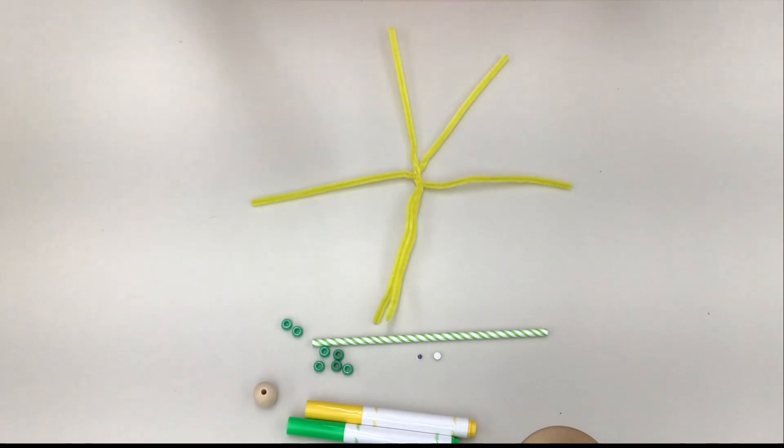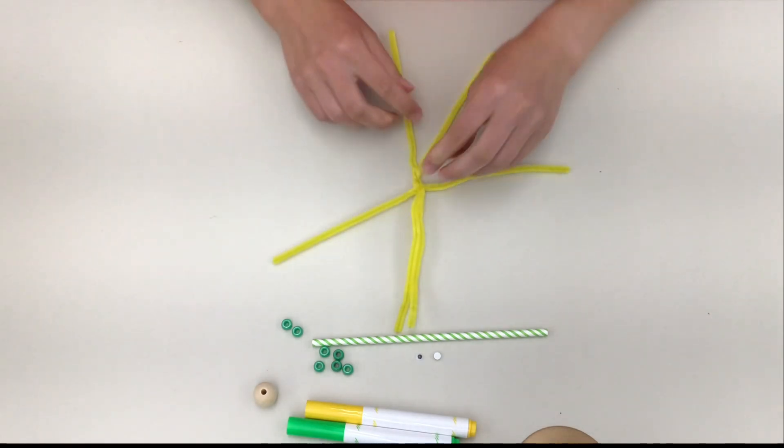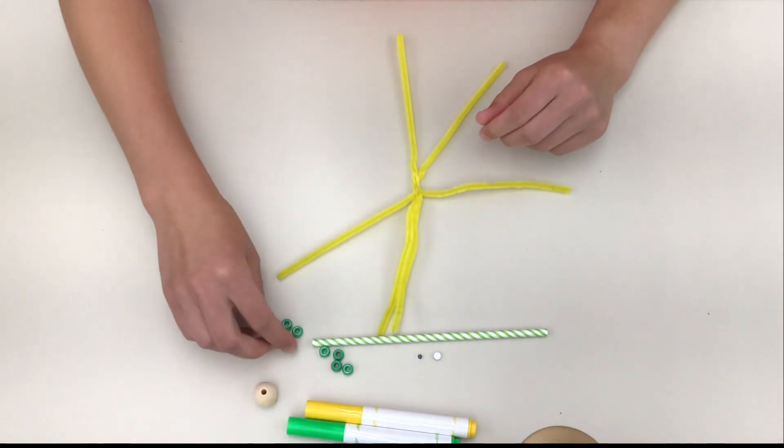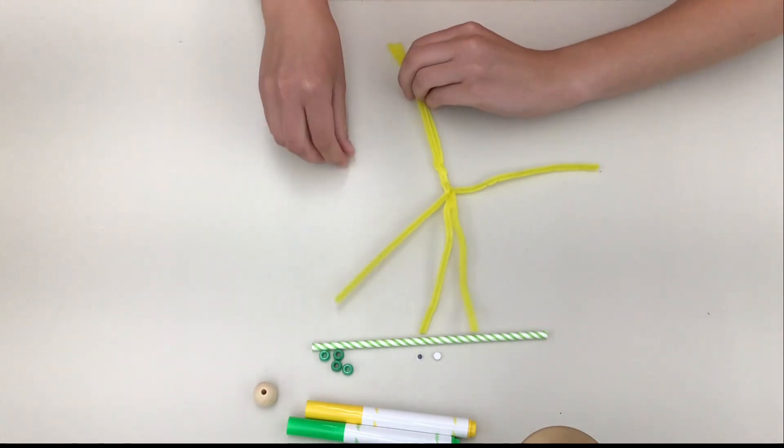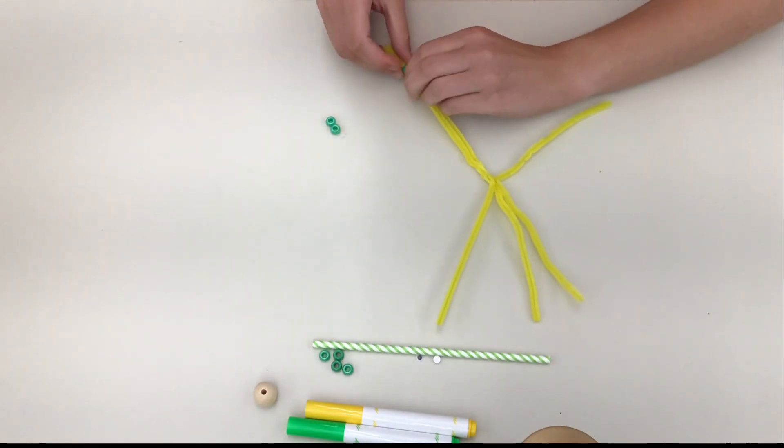Once you've arranged your pipe cleaners like this, take three pony beads and slide them up the two on the bottom. These two on the bottom are your legs, and these pony beads are going to form the body of your superhero.